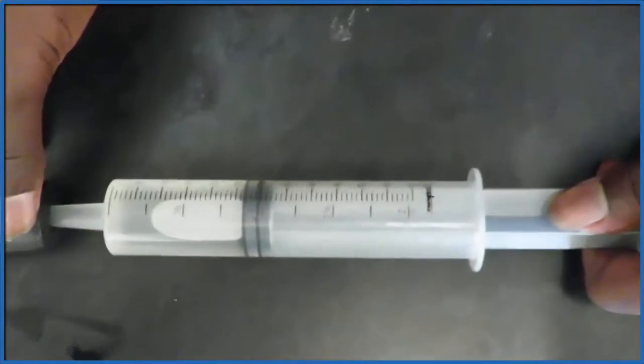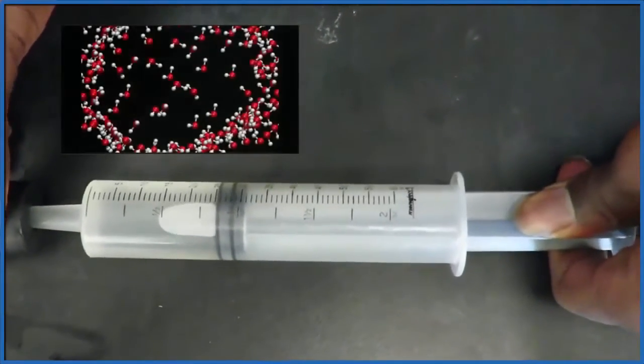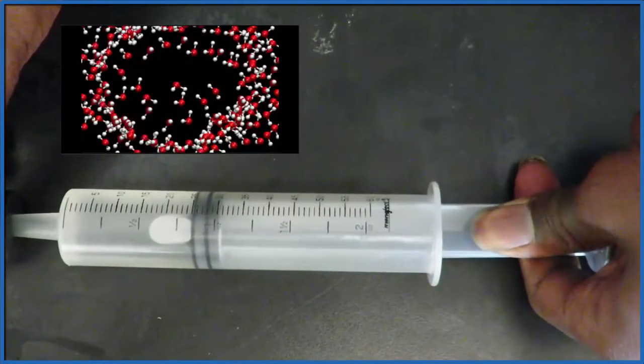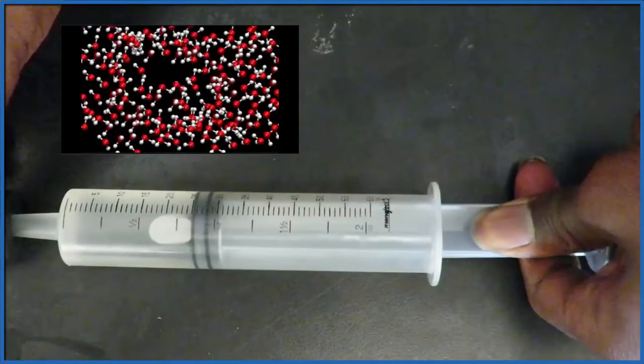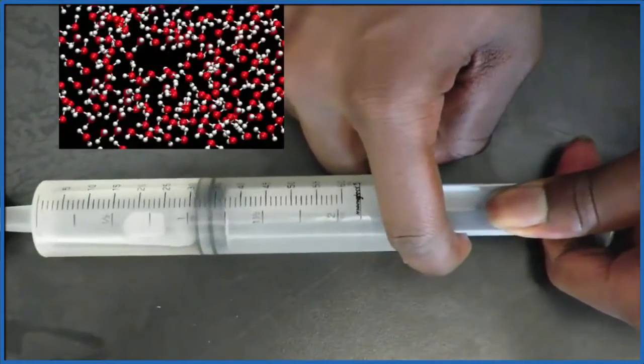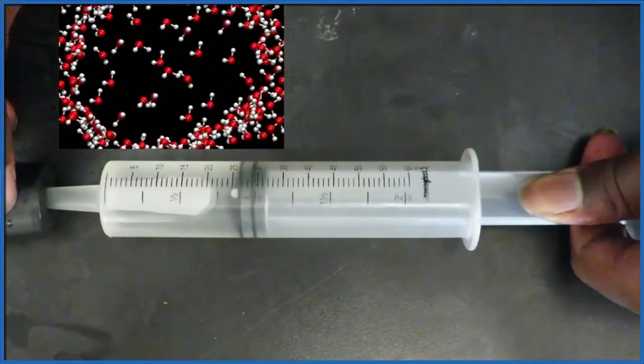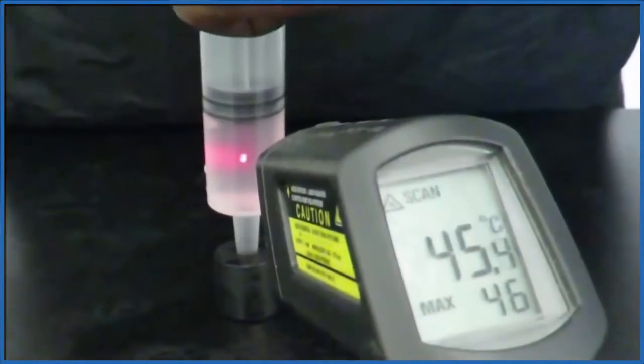We can see this with the syringe. We push in the plunger, we increase the pressure, molecules move closer together, and the bubble becomes smaller. When we pull the plunger out, we're decreasing the pressure. That means those molecules can spread out more easily, and the bubble grows.